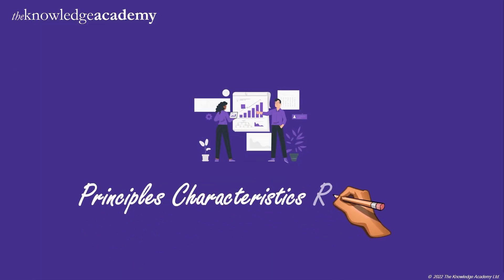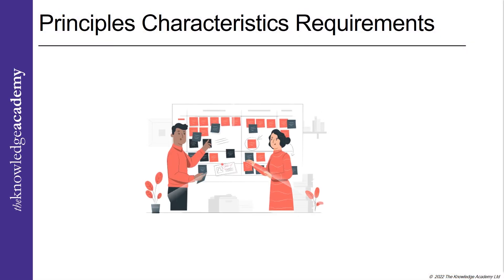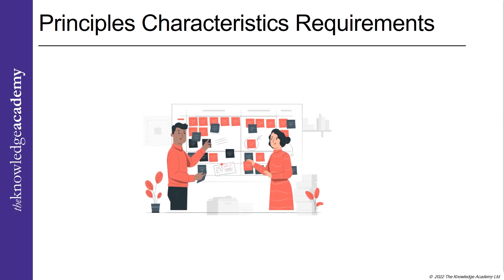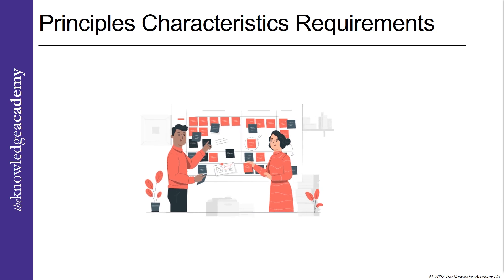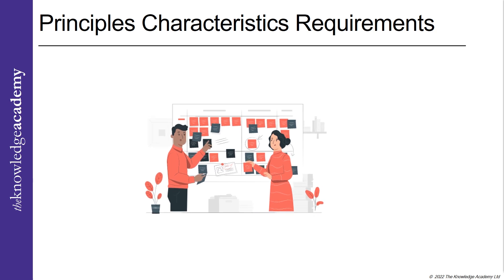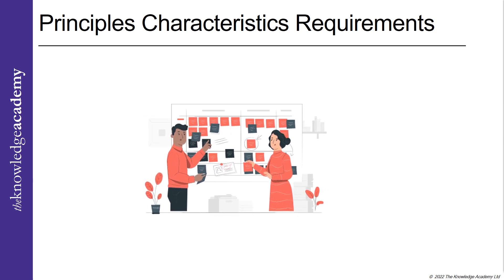Principles Characteristics Requirements. Typically, your enterprise architecture should include 10 to 20 guiding principles. The adaptability of your architecture will be improved if you have fewer architectural principles. On the other hand, few will lead to generic statements that can only be accomplished in a practical, realistic way.